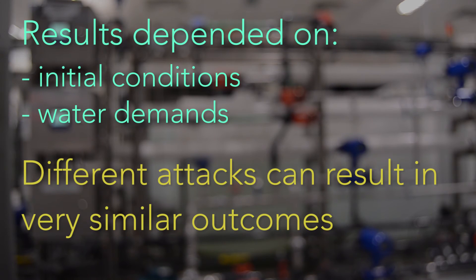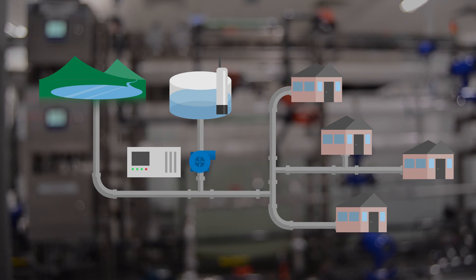They also found that attacks that targeted different components of the system could have very similar outcomes. These important findings suggest that a clever hacker can use information about the system to maximize the effect of an attack.